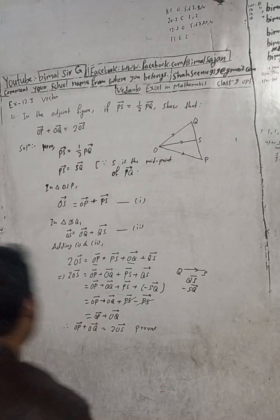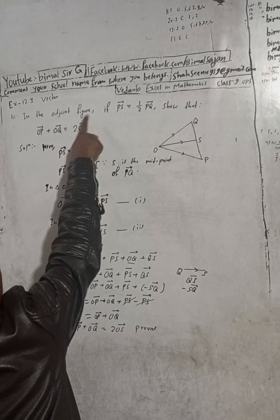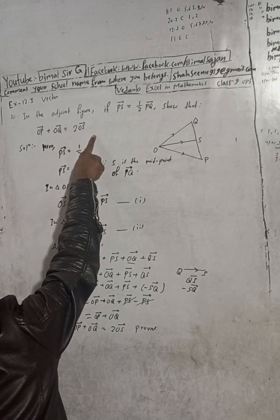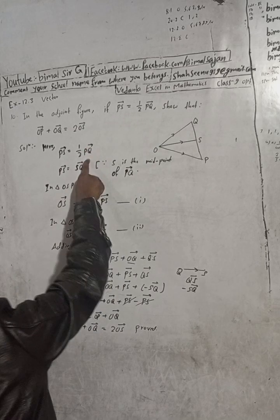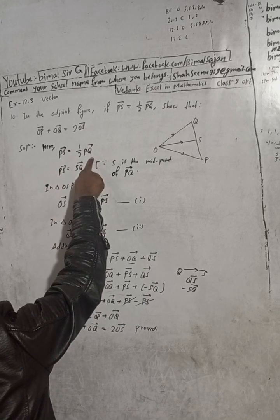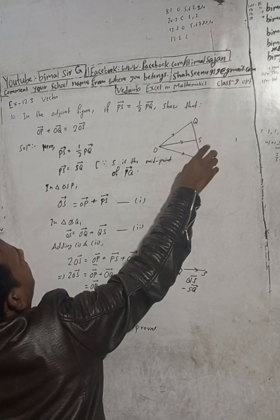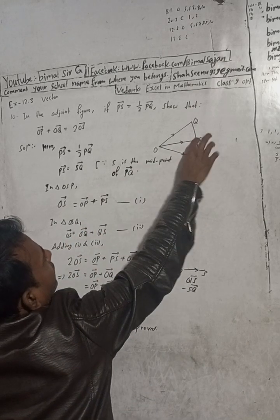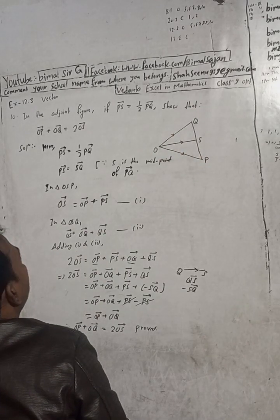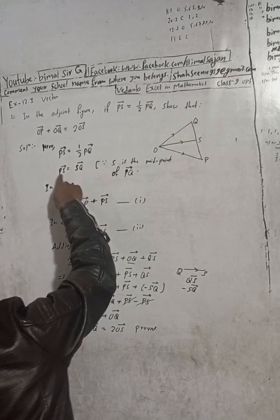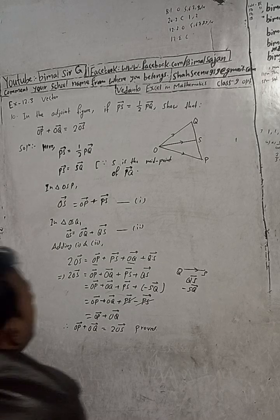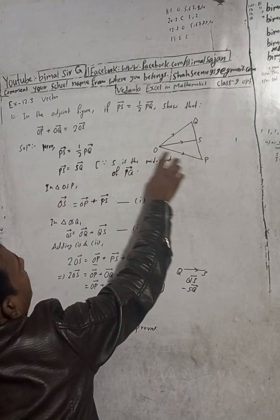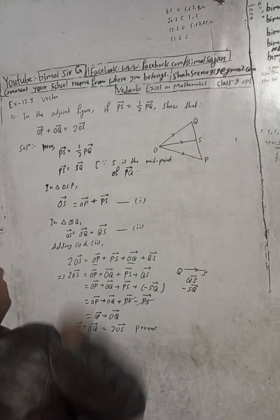Nepali maa: यस figure मा PS vector is equal to half PQ vector दिएको छ। PS vector is equal to PS is equal to PQ को आधा भएकोले PS equal to SQ हुन्छ। यो midpoint हो — triangle OSP मा OS vector is equal to OP plus PS, because S is the midpoint.